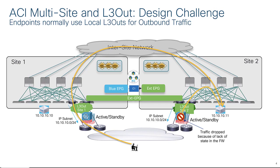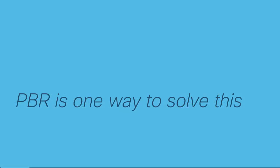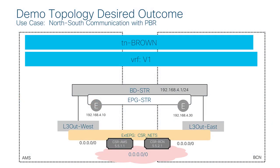What happens when we look at the return traffic? ACI's default behavior is to choose or prefer its local layer three outs. So endpoint 10.10.10.11 will look in its routing table, see that it has a local layer three out, and go to choose that. Now the firewall in site number two does not have any knowledge or state information about this conversation, so its only choice is to drop that traffic. Obviously that's not what we want. The tool I'm referring to to solve this challenge is something called policy-based redirect or PBR.